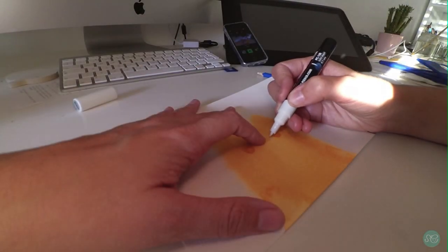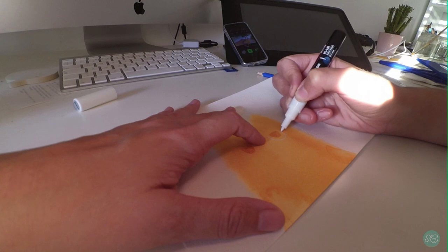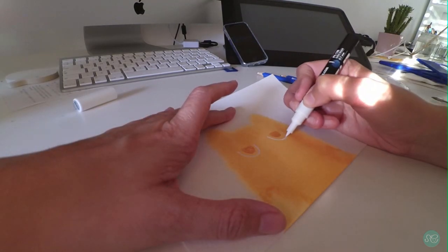Now I'm just working on some details and since I don't have masking fluid, I use my poshka pen to paint the white in the eyes.